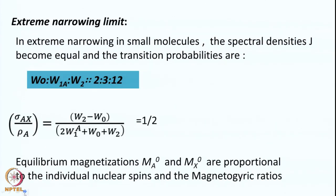In the extreme narrowing condition, molecules can tumble very fast, and the spectral density becomes equal to the transition probability. The transition probabilities omega 0, omega 1 (for A spin), and omega 2 are in a ratio of 2 to 3 to 12. Performing the algebra, the ratio of the cross relaxation rate to the auto relaxation rate gives one half — which is what we were saying — confirming the 0.5 enhancement for small molecules.